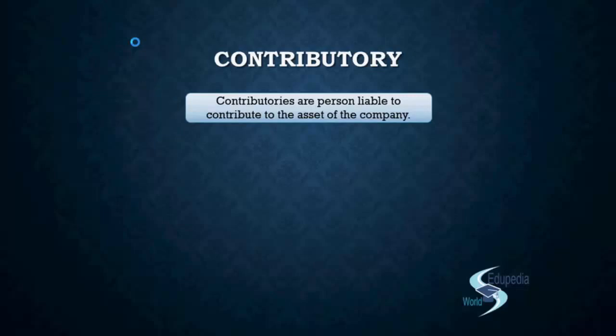Who are the people liable to contribute to the assets of the company? Assets do not necessarily mean only fixed assets like plant, machinery, building, office, fixtures, or furniture. Even debtors are assets. So if somebody owes something to the company, they are contributing to the asset of the company — they are contributories. Even cash is an asset. So contributories are people who contribute to the fund of the company.